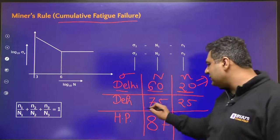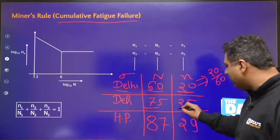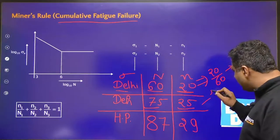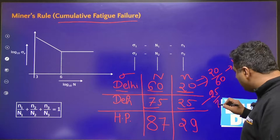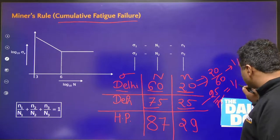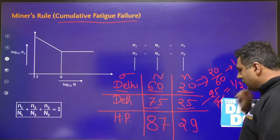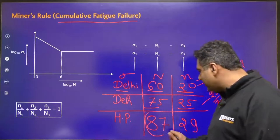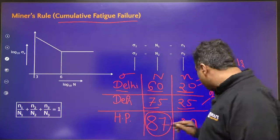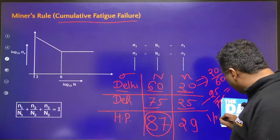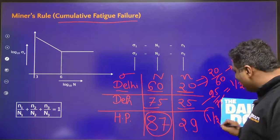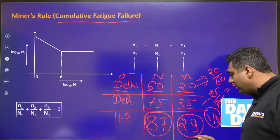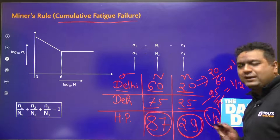Similarly, here 75 years is the average and you are living 25 years in Dehradun, so one third you are using here also. Then let us say in some hilly area the average life is 87 years. So whatever is left — one third — you would be living here, and that would also be small n3 by capital N3. You can find out it would be coming out to be 29 years.